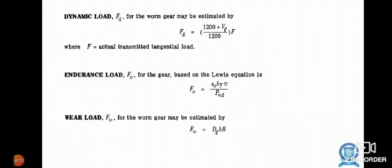Dynamic load F_D for the worm gear may be estimated by F_D = (1200 + V_G) / 1200 × F, where F is the actual transmitted tangential load.